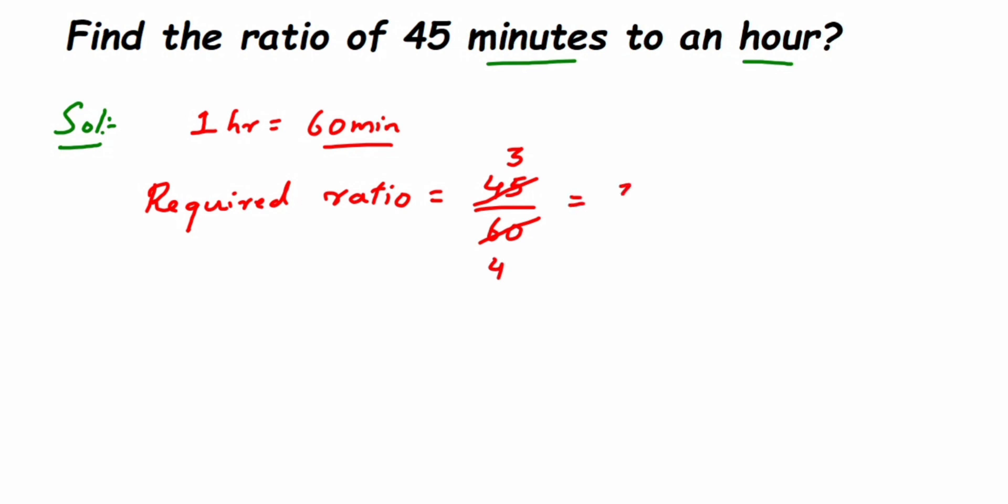So 3 upon 4 cannot be cancelled further. This is a reduced form, so the ratio will be equal to 3 is to 4. Remember, when you're cancelling it with any other table, the answer will come same. At the end you will want to get the same answer.